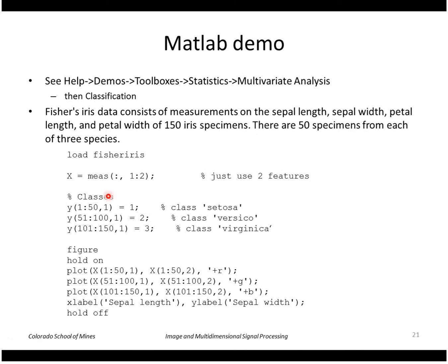So the first 50 in the set are class 1, the second 50 class 2, the third 50 is class 3. So this particular data set has four measurements for each sample. So each vector is four dimensional. For this demo I'll just use the first two features here.